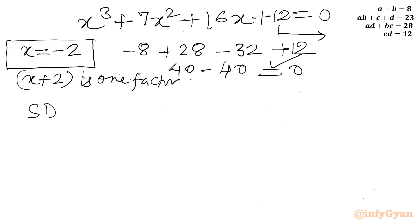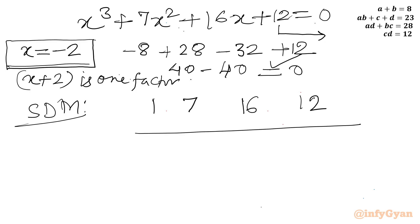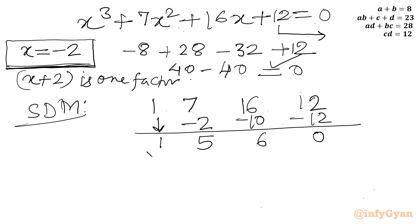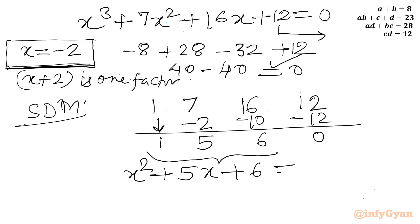Now I will use the Synthetic Division Method once again. Writing all the coefficients of the cubic equation: 1, 7, 16, 12. This time the base solution is minus 2. Bring down 1; minus 2 times 1 gives minus 2, giving 5; minus 2 times 5 gives minus 10, giving 6; minus 2 times 6 gives minus 12, remainder 0. So here we have the coefficients for a quadratic equation: x squared plus 5x plus 6 equals 0.